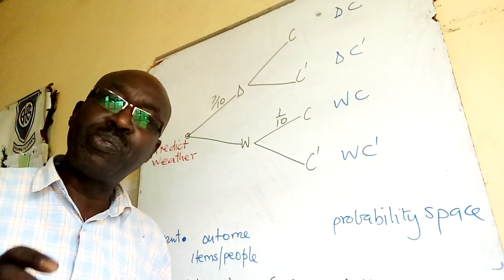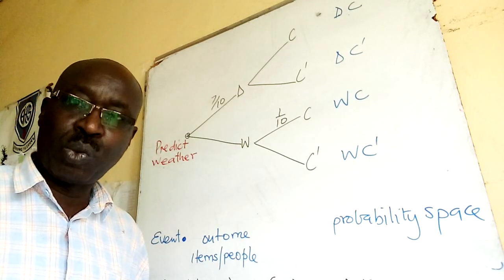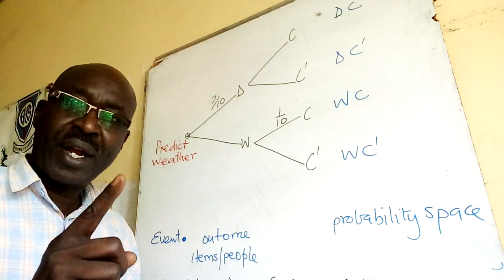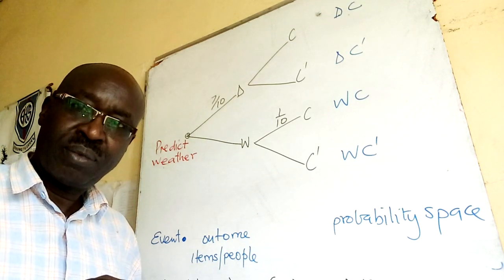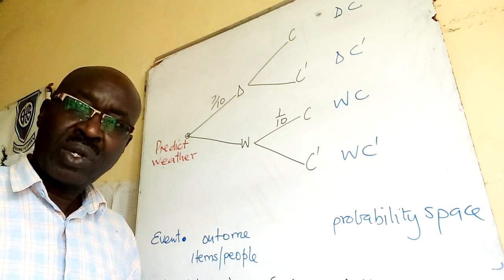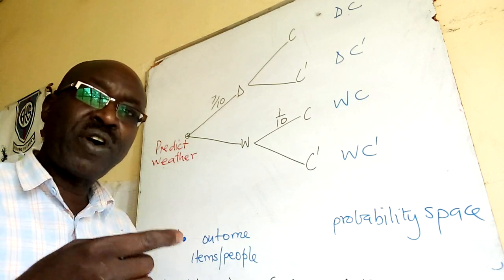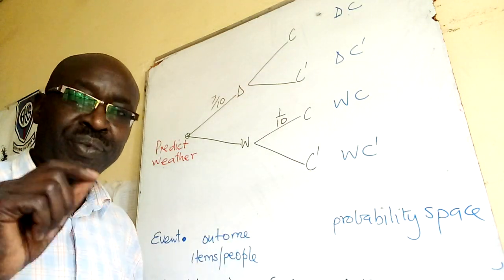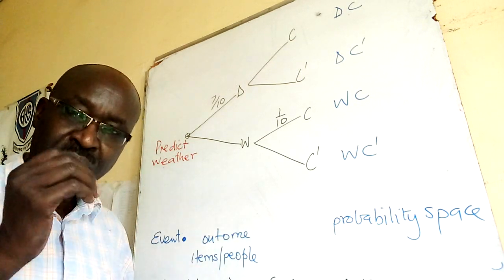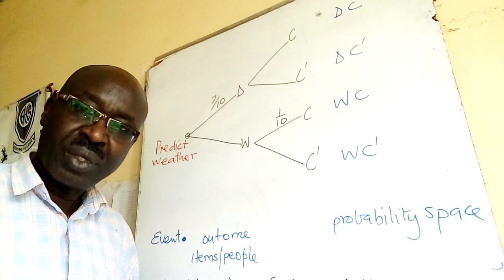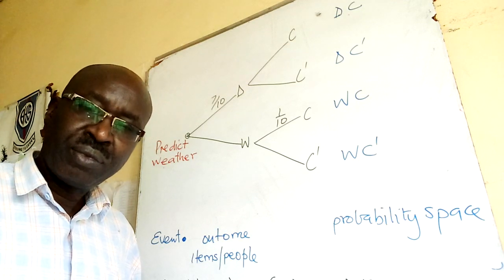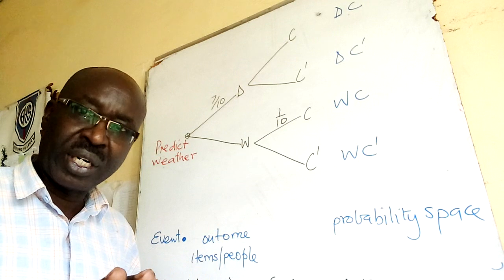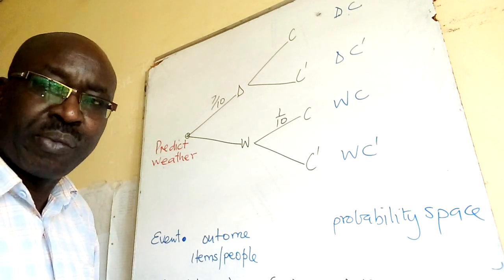Welcome again to probability part two. Yesterday I introduced probability and the core things. First, know the event — the format of the question will ask you to find the probability that whatever comes after the word 'that' is the event. Then try to know the possible outcomes as guided by the question, draw the tree diagram, get the probability space, and remember the probability of two opposite events adds up to one.